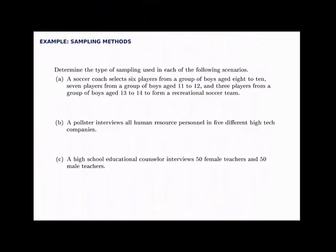In this example, we'll decide which type of sampling is being used in each description. First, a soccer coach selects six players from boys aged 8 to 10, then seven players from boys aged 11 to 12, and finally three players from boys aged 13 to 14 to form a rec team. The coach has divided the group into segments based on age — 8 to 10, 11 to 12, and 13 to 14 — and from each segment selected several players. Because we're choosing some from each group, this is stratified sampling.